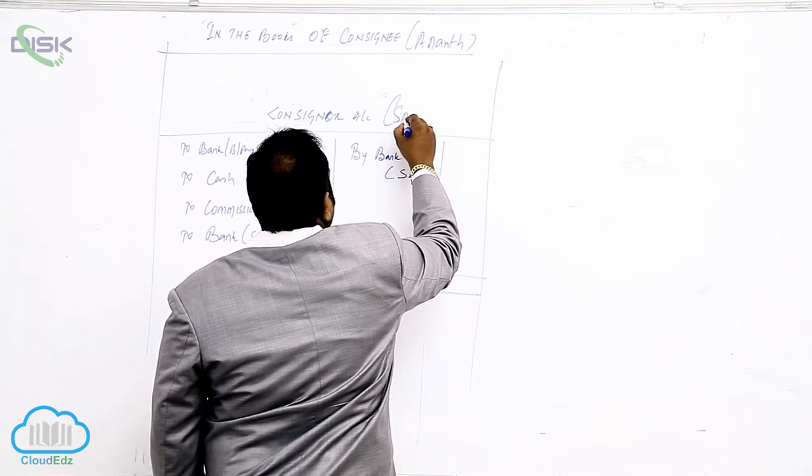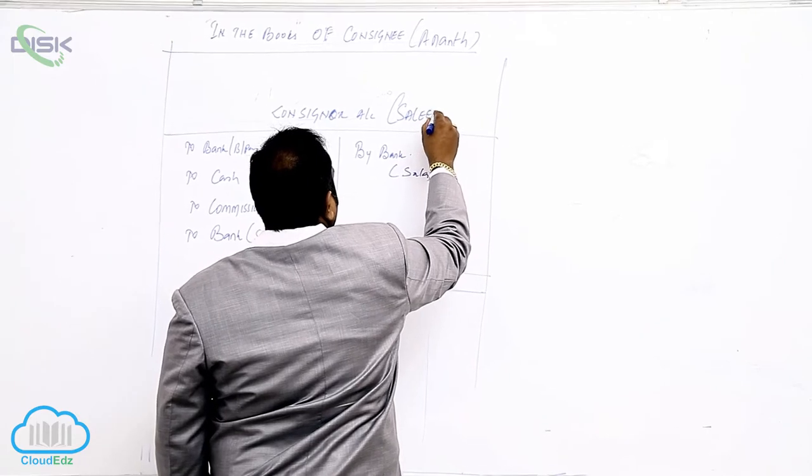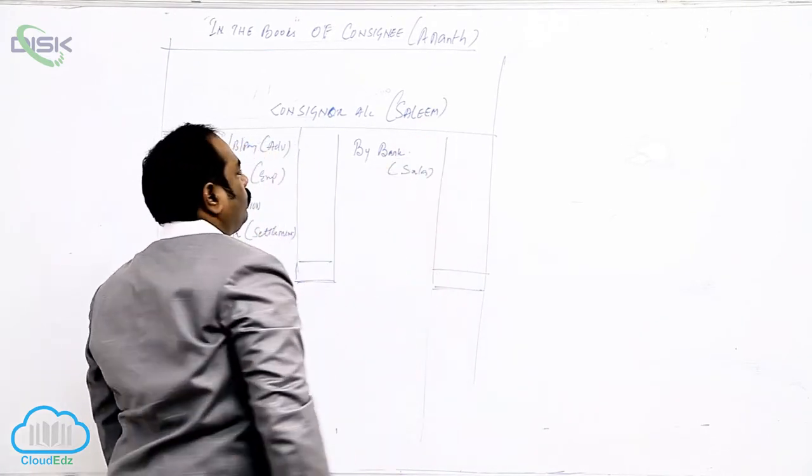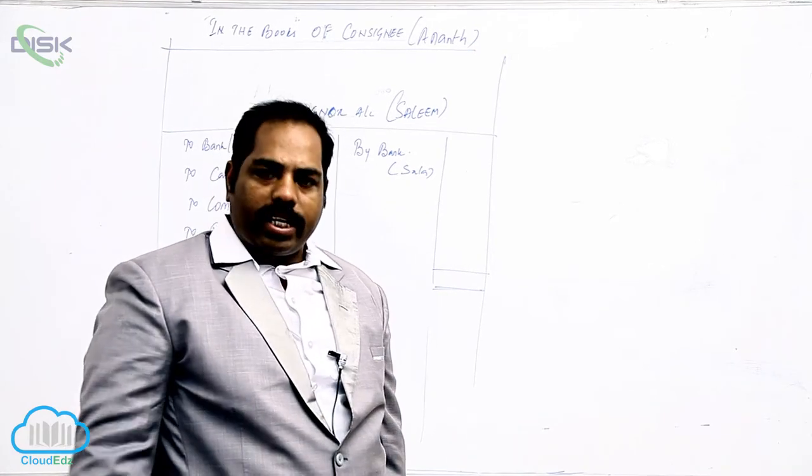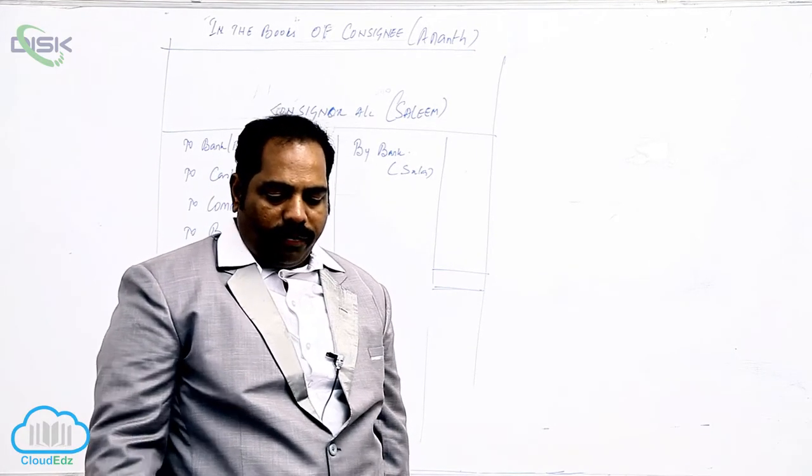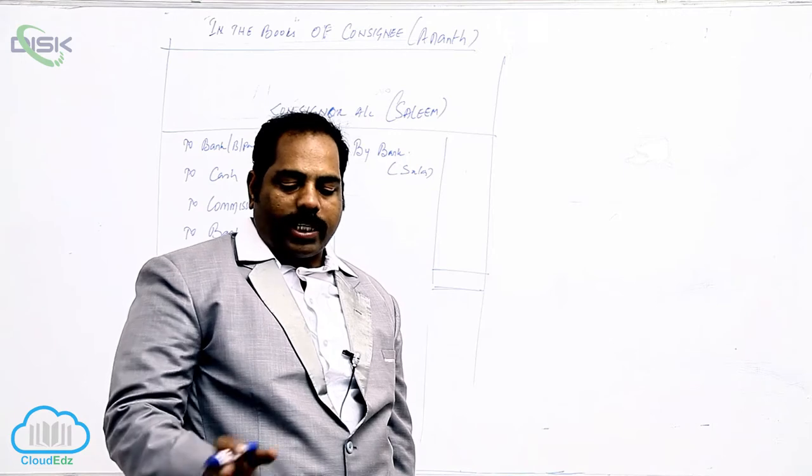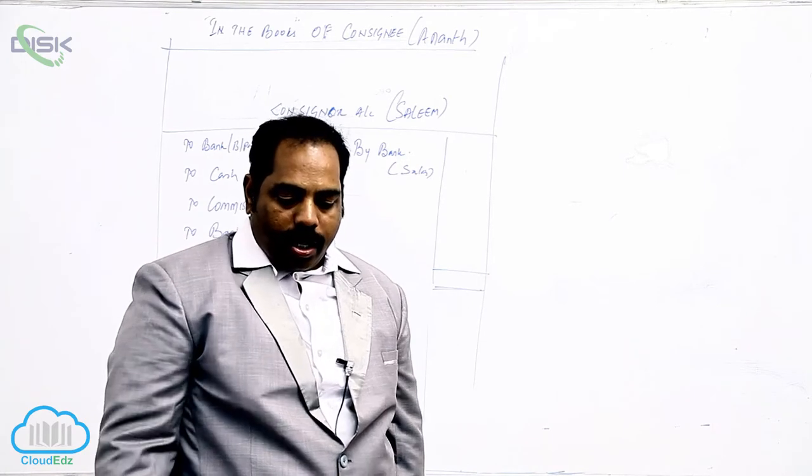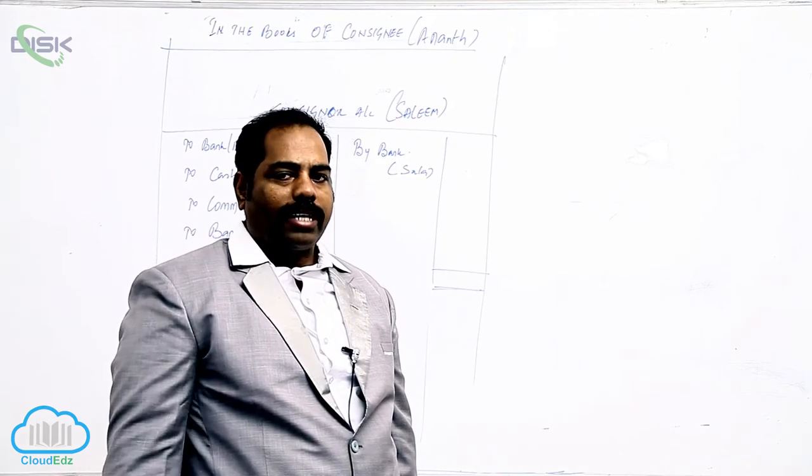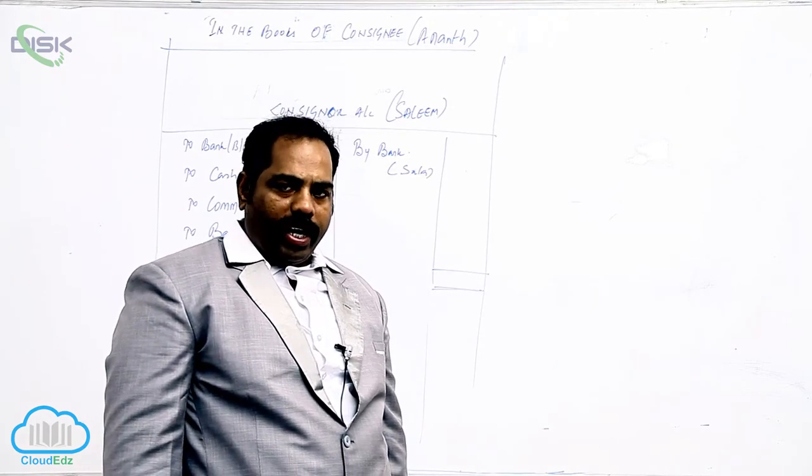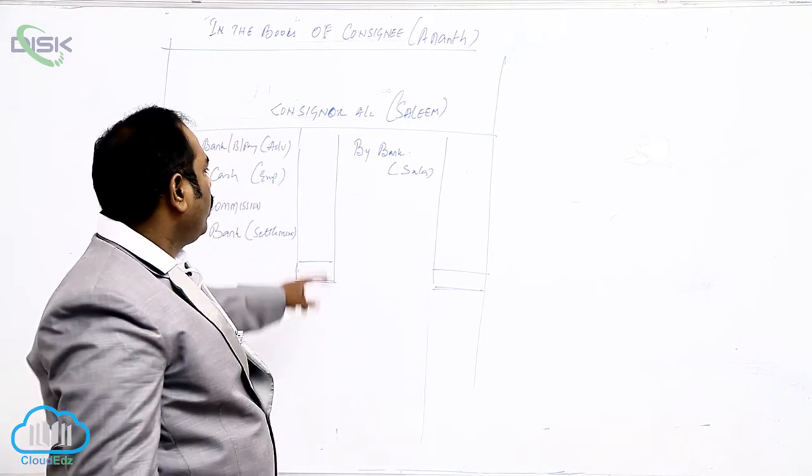We are opening consigner account, that is Salim's account. So when we send the goods, there is no entry in the books of consignee. Leave it off. Salim has paid the expense - expense meant by consignor, no entry. And drew a bill on Anant for 10,000. Now the consignee is accepting a bill. Whenever he accepts the bill, the entry is what?